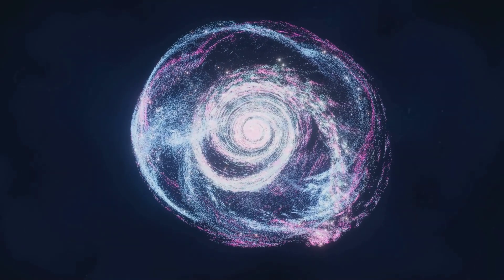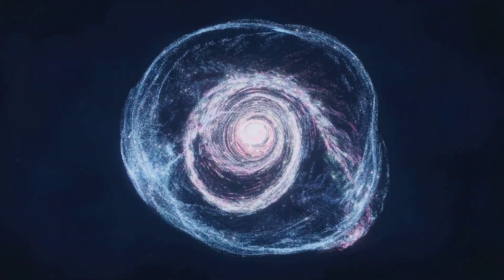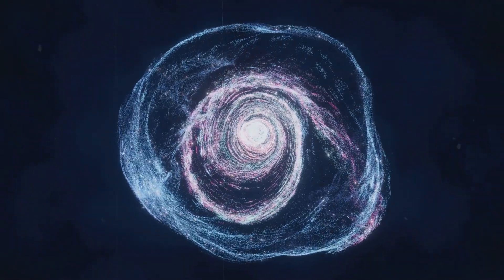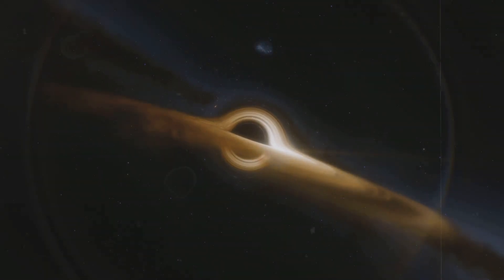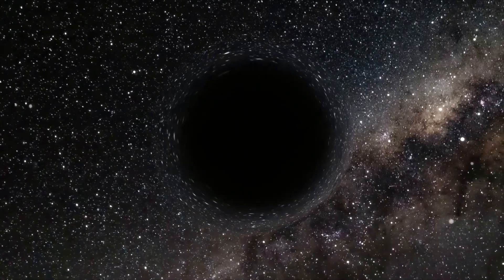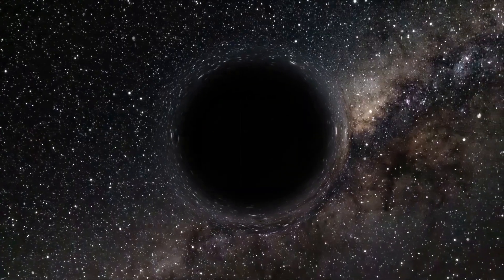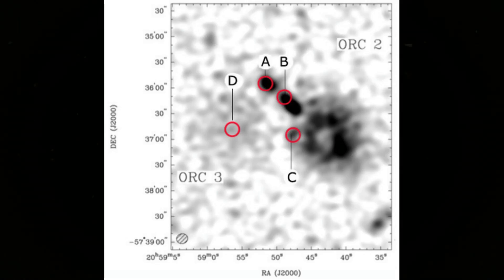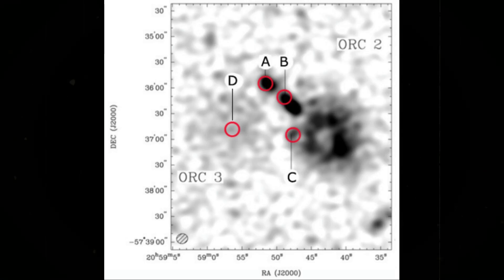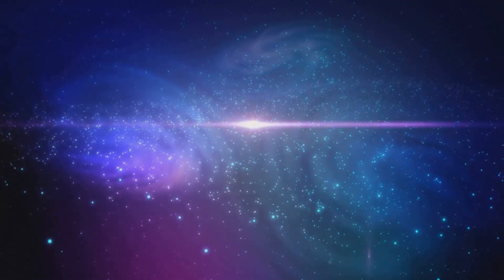This is where theories splinter. Some argue that these colossal rings are the echoes of cataclysm so violent they defy imagination. Picture two supermassive black holes, each weighing billions of suns, spiraling toward one another in a final embrace. The collision would ripple spacetime itself, unleashing gravitational waves and a shock front that could sweep through intergalactic gas, compressing it, igniting electrons, and leaving behind a ghostly shell visible only in radio. If that scenario is correct, then each orc is a cosmic gravestone, marking the death of a galactic titan.